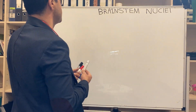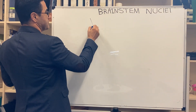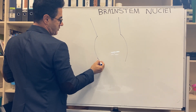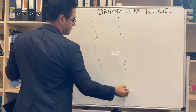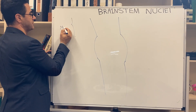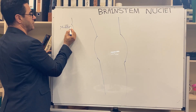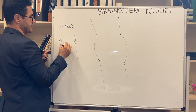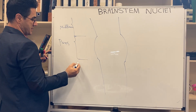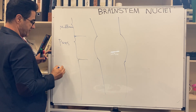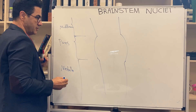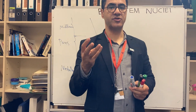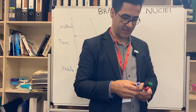I'm going to show you the different parts of the brain stem. At the top here we have the midbrain. In the middle you can see the pons — here is the pons. And down here we have the medulla. We have three types of nuclei: motor nuclei, sensory nuclei, and parasympathetic.